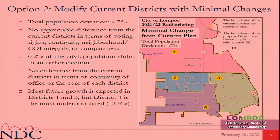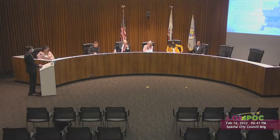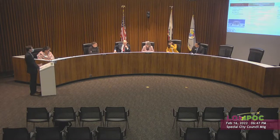Council member Starbuck asked what voter disenfranchisement looks like in option two. Dr. Phillips responded that no voter would be disenfranchised — the shift moves voters to an earlier election rather than a later one. By contrast, option three involves a much more drastic shift: 1.8 percent going to an earlier election but 2.7 percent going to a later election.